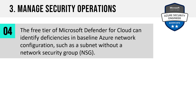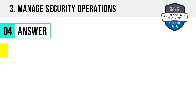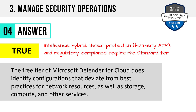Question 4. The free tier of Microsoft Defender for Cloud can identify deficiencies in baseline Azure network configuration, such as a subnet without a network security group. True or false? Defender for Cloud used to be called Azure Security Center. The answer is true. The free tier of Microsoft Defender for Cloud does identify configurations that deviate from best practices for network resources as well as storage, compute, and several other services. You'll see these recommendations pop up under resource security hygiene.